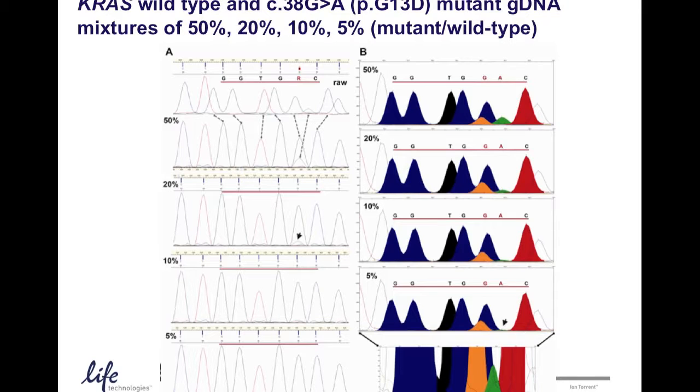Shown here is an example where we look at mixtures of wild type and mutant DNA that carry the mutation G to A at position 38, which leads to this particular conversion of amino acids. When you look at the Sanger sequencing traces, shown here in pane A, you can detect the presence of the 50% mutant at this discrete little peak under the G peak here. At 20% presence of the G to A transition, you barely see this little hump in the sequencing trace. At 10% presence of that mutation, it's barely detectable. At 5%, it's almost invisible using the sequence analysis view.